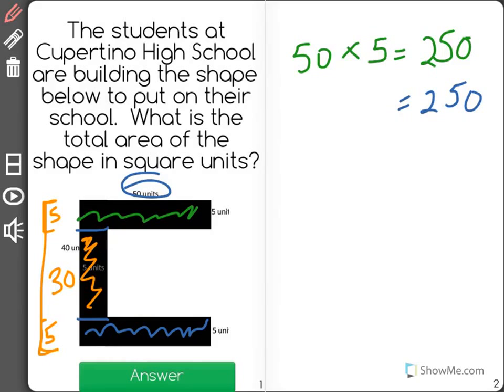And so the middle part has an area of 30 times 5, which is the width as given, equal to 150. The sum of all of these is 650 square units.